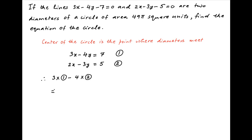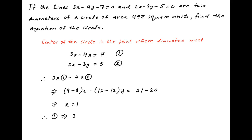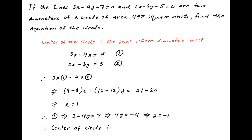Subtracting 4 times the second equation from 3 times the first equation, we get on the left-hand side: 9 minus 8 times x, minus 12 minus 12 times y, is equal to 21 minus 20, which implies that x is equal to 1. Using this in equation 1, we get 3 minus 4y is equal to 7, which implies that 4y is equal to minus 4, or y is equal to minus 1. Therefore, the coordinates of the center of the circle are (1, -1).